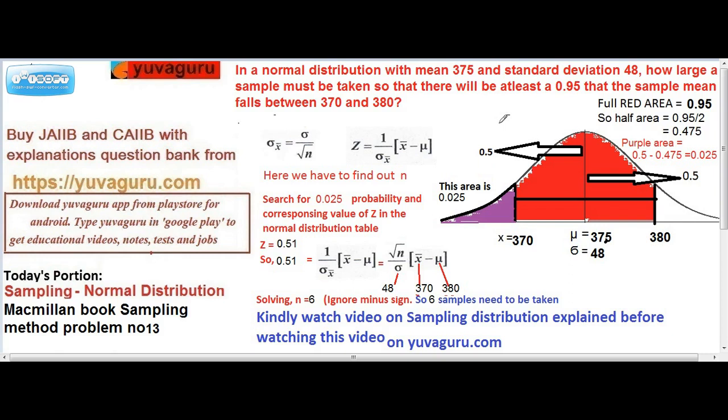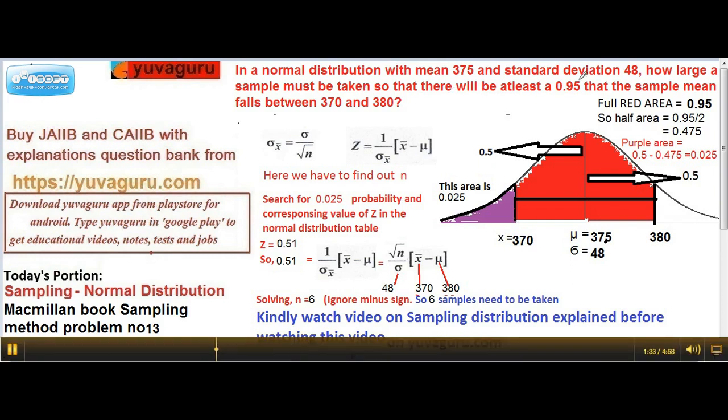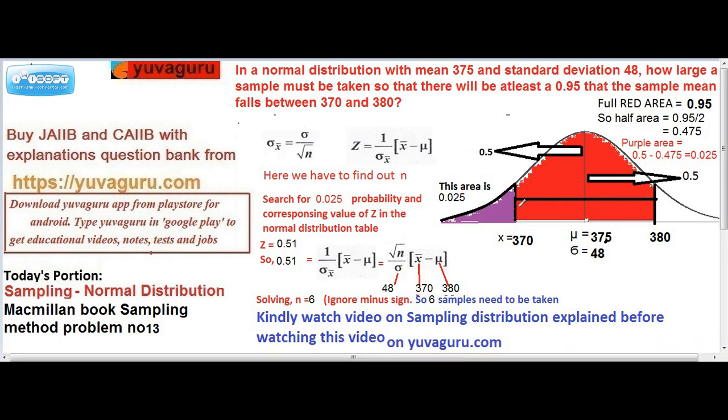Now let's look at this. It is given that this area is 0.95, basically 0.95 means this whole area is 0.95 from here to here.